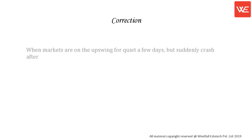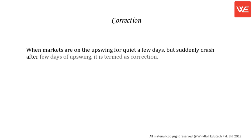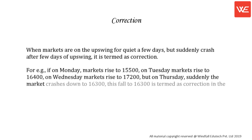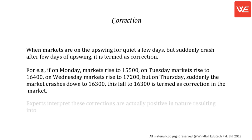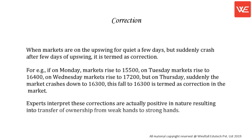Correction. When markets are on the upswing for quite a few days but suddenly crash after a few days of upswing, it is termed as correction. For example, if on Monday markets rise to 15,500, on Tuesday to 16,400, on Wednesday to 17,200, but on Thursday suddenly the market crashes down to 16,300 — this fall to 16,300 is termed as a correction in the market. Experts interpret these corrections as actually positive in nature, resulting in a transfer of ownership from weak hands.